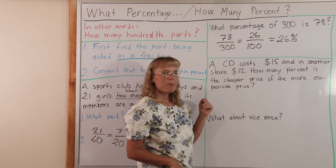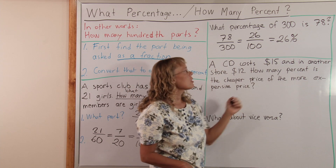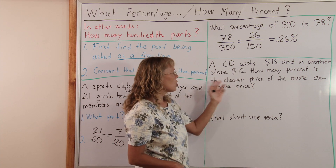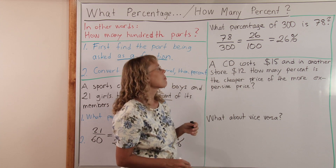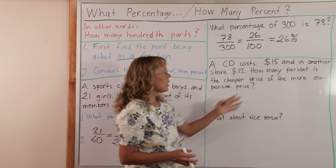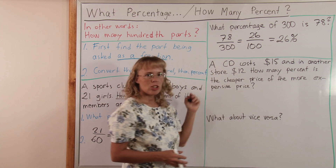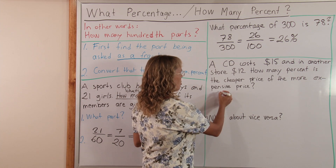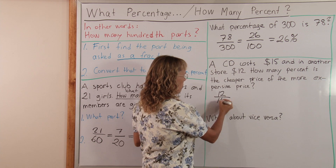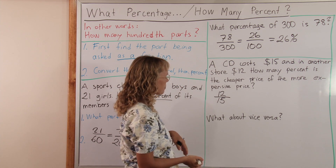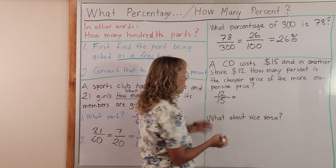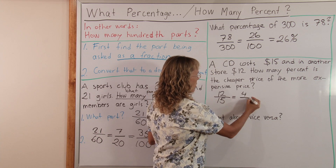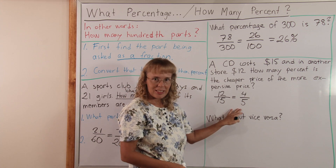My last problem: A CD costs 15 dollars and in another store it costs 12 dollars — it's cheaper. How many percent is the cheaper price of the more expensive price? First find what part: what part is the cheaper price of the more expensive price? That's a fraction — it is the cheaper price over the more expensive price: 12 over 15. I can simplify this by 3, since both are divisible by 3, and I get 4 fifths. You might already know what this is as a percent.